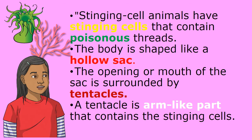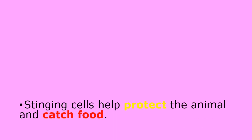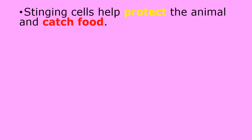The opening, or the mouth of the sack, is surrounded by tentacles. A tentacle is an arm-like part that contains the stinging cells. Stinging cells help protect the animal and catch food.